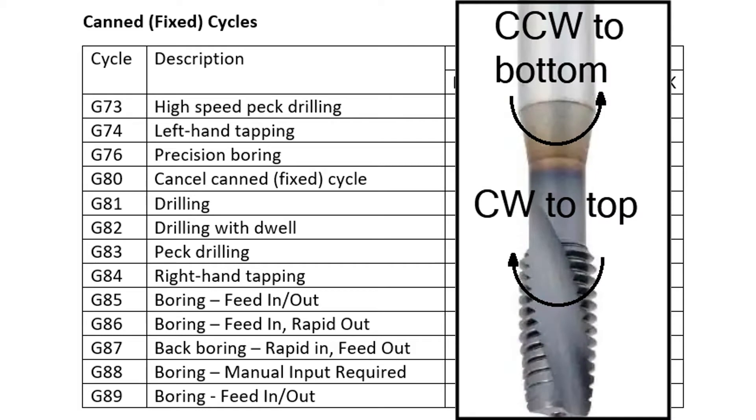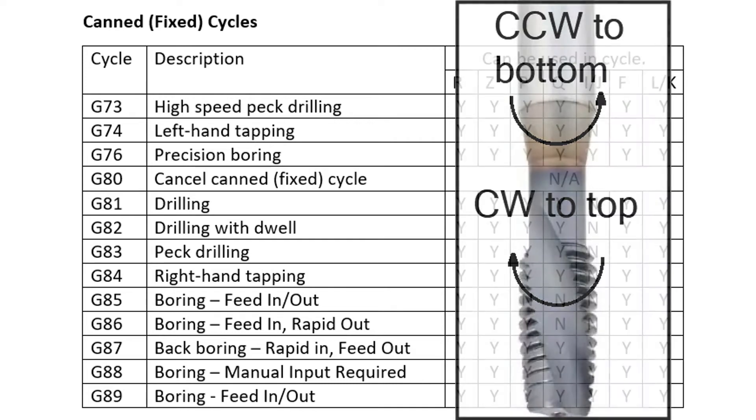The G74 will create a left-handed threaded hole. This tapping cycle will spin the tap counterclockwise to the bottom of the hole where the spindle will change its direction of rotation to clockwise while the tap is removed from the hole.